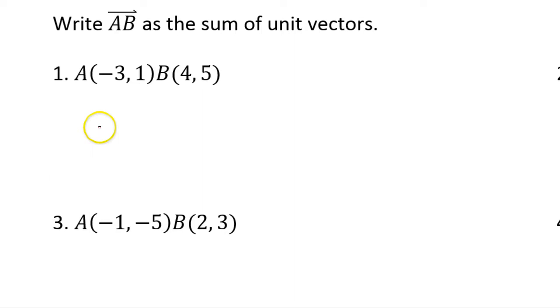For problem number 1, we are supposed to write the vector as the sum of unit vectors. So, my strategy will be to first write it in component form, as we are used to, and then to write it using unit vectors. When I do component form, I do x2 minus x1. So, I'm doing 4 minus negative 3. So, I'll say 4 plus 3 and 5 minus 1. This is how we find component form.